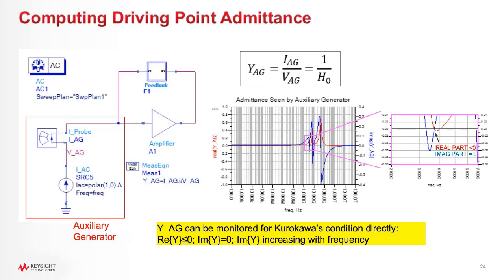You can use Kurokawa's oscillation condition, which looks at admittance rather than impedance — inverting the impedance because it's much easier to detect zero than infinity. Kurokawa's condition is a classic oscillator condition: the real part is less than or equal to zero, and the imaginary part equals zero crossing positively with respect to frequency. This is an autonomous oscillation — one that will just start up by itself without any external stimulus.